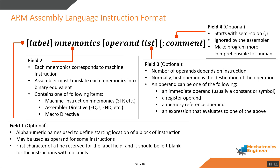Each line in an ARM assembly source file can be empty, a comment, an assembler directive, a macro invocation, or an assembly instruction. Assembly language source statements can contain four ordered fields: label, mnemonics, operand list, and comment.